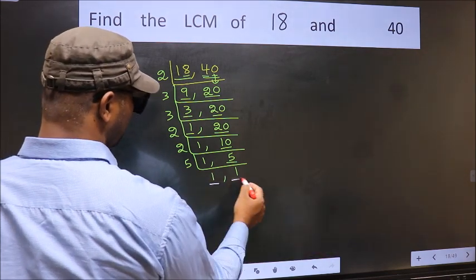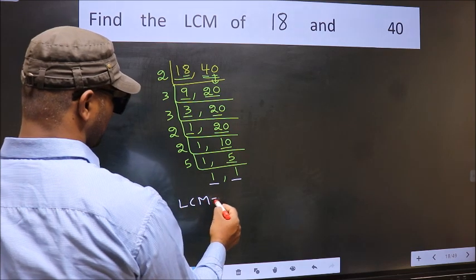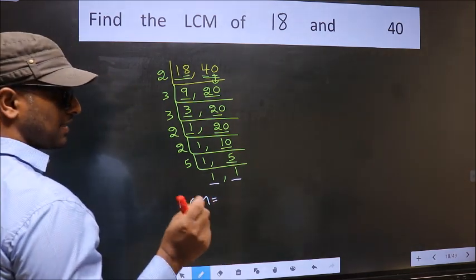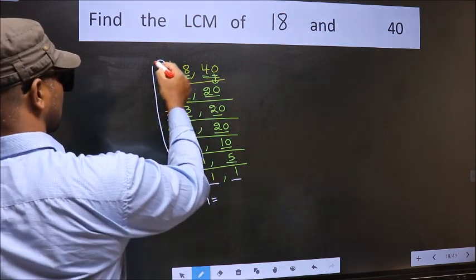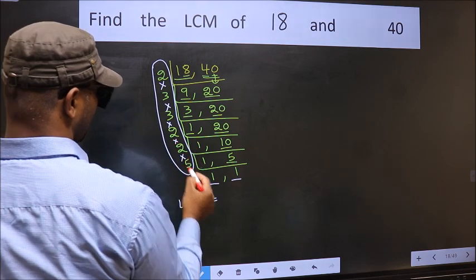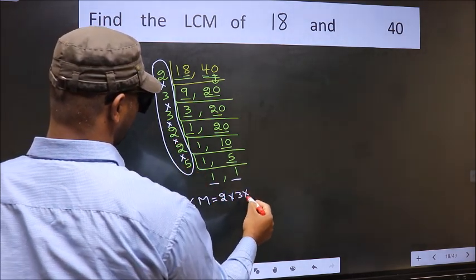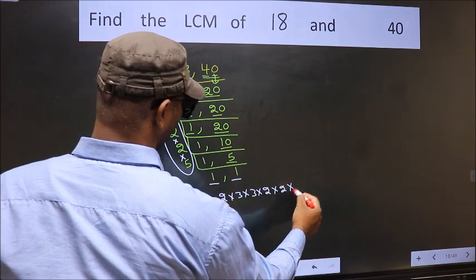So we got 1 in both the places. So our LCM is the product of these numbers. That is 2 into 3 into 3 into 2 into 2 into 5.